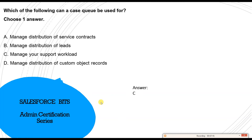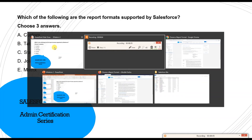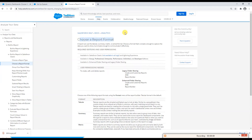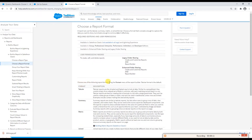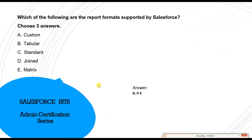Next question: which of the following are the report formats supported by Salesforce? This is straightforward — the four report types are tabular, summary, matrix, and joined. The documentation confirms these formats in the report builder, with tabular being the default. So the correct answers are B, D, and E.